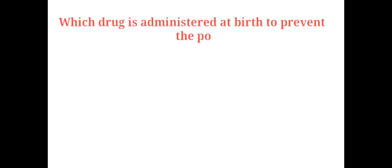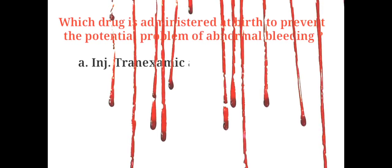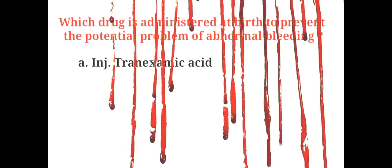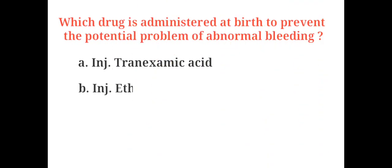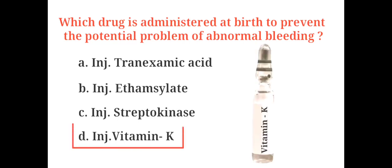Which drug is administered at birth to prevent the potential problem of abnormal bleeding? A. Injection tranexamic acid, B. Injection ethylate, C. Injection streptokinase, D. Injection vitamin K. The answer is D. Injection vitamin K.